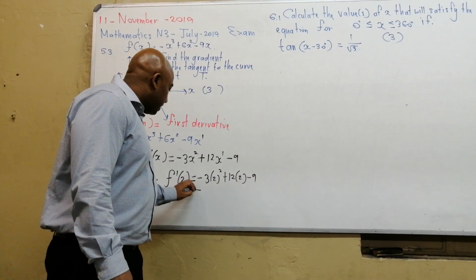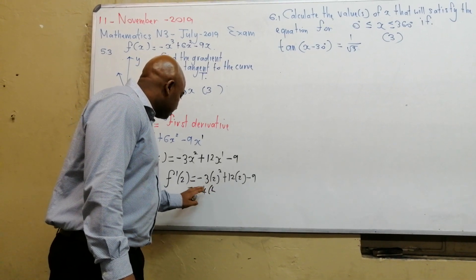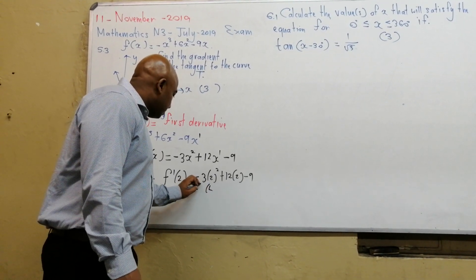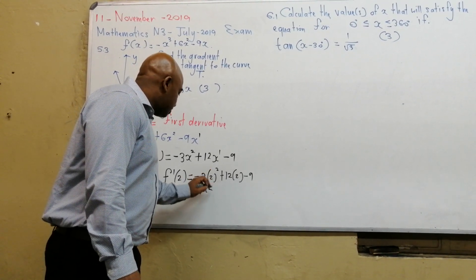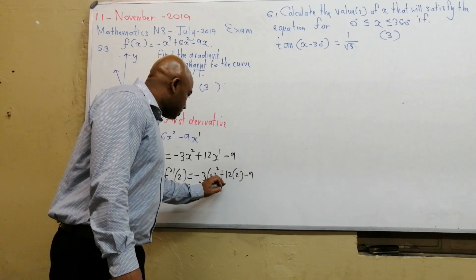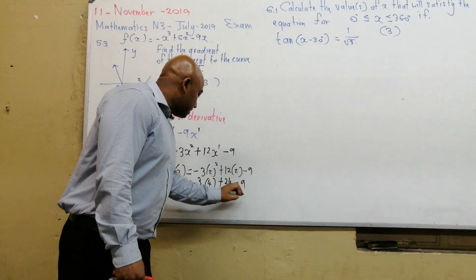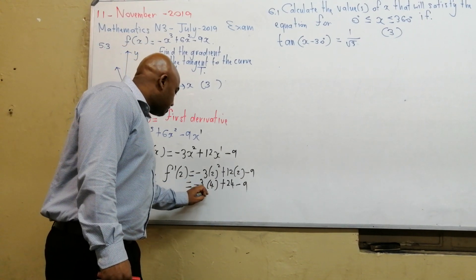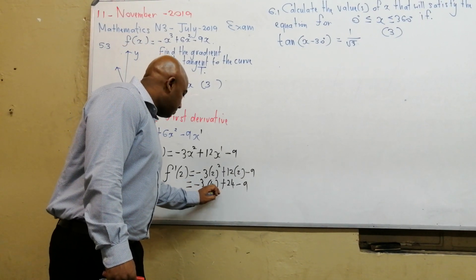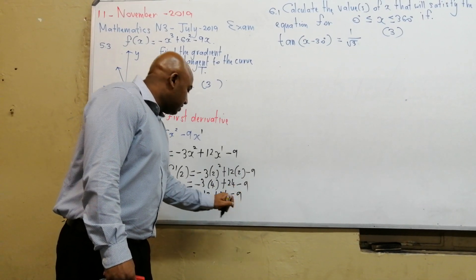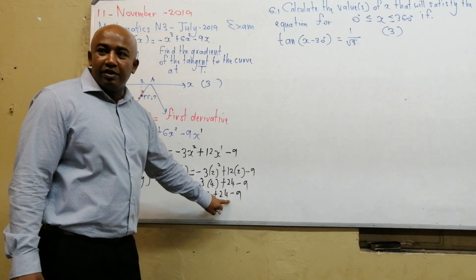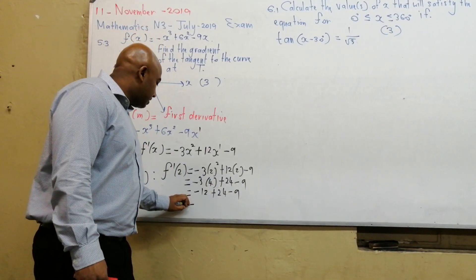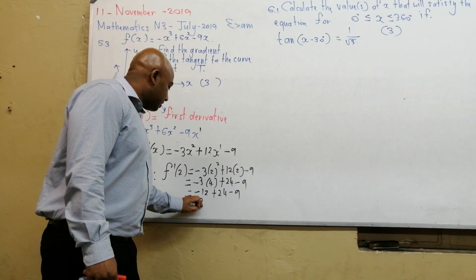Working that out: minus 3 times 2 squared is minus 3 times 4, which is minus 12; plus 12 times 2 is 24; minus 9. So 24 minus 12 is 12, and 12 minus 9 equals 3.